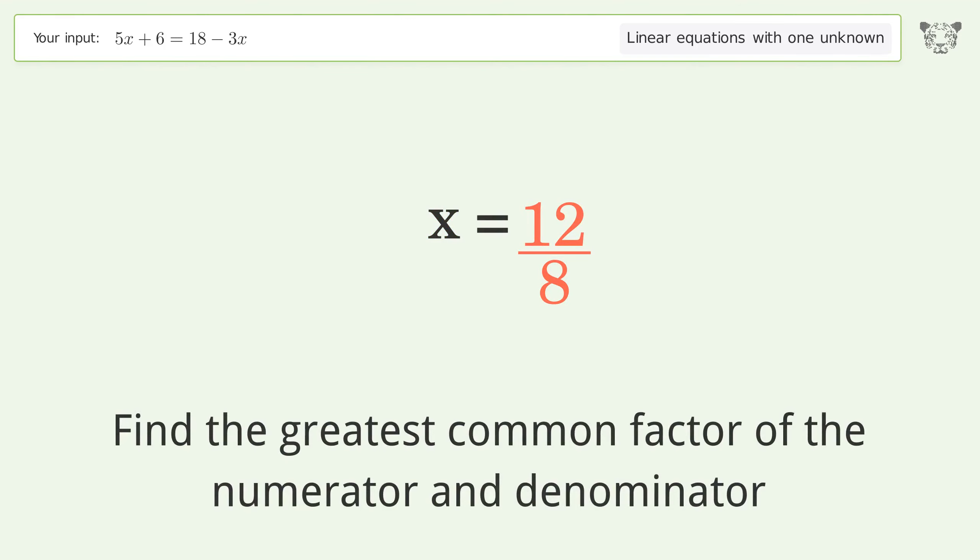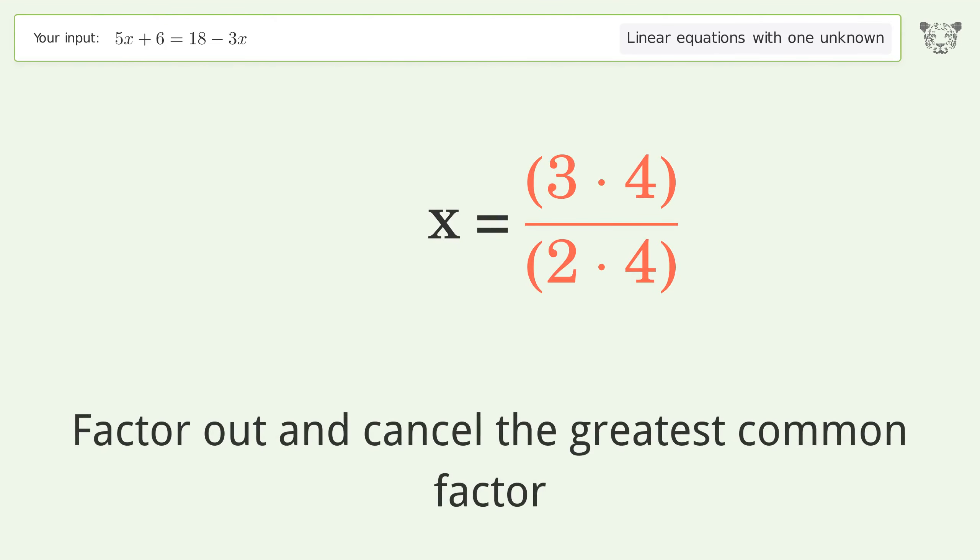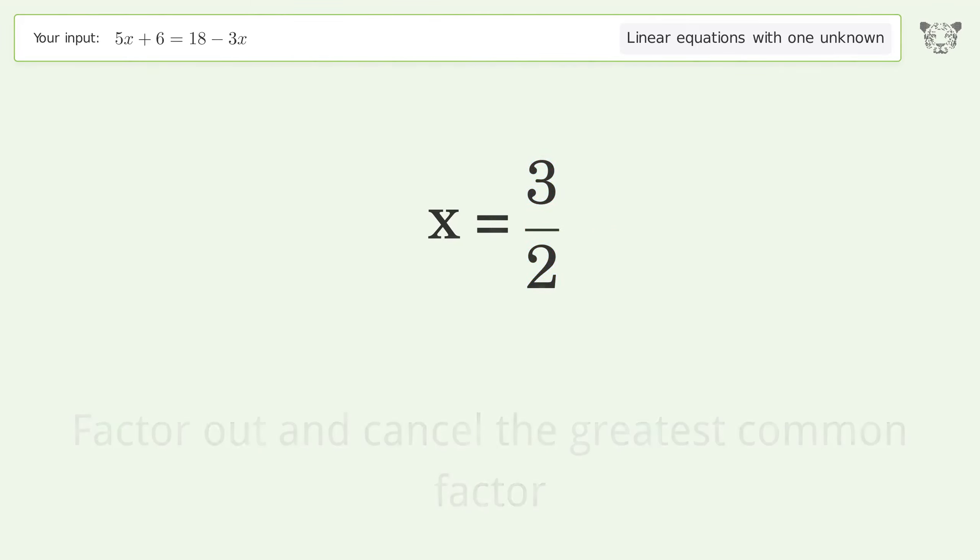Find the greatest common factor of the numerator and denominator. Factor out and cancel the greatest common factor. And so the final result is x equals 3 over 2.